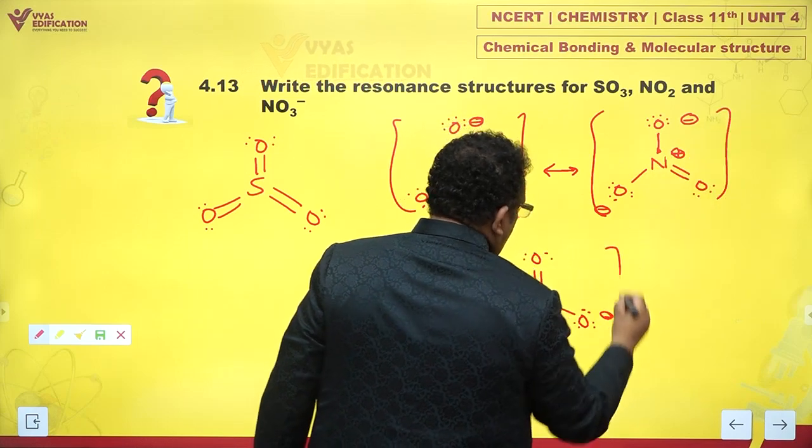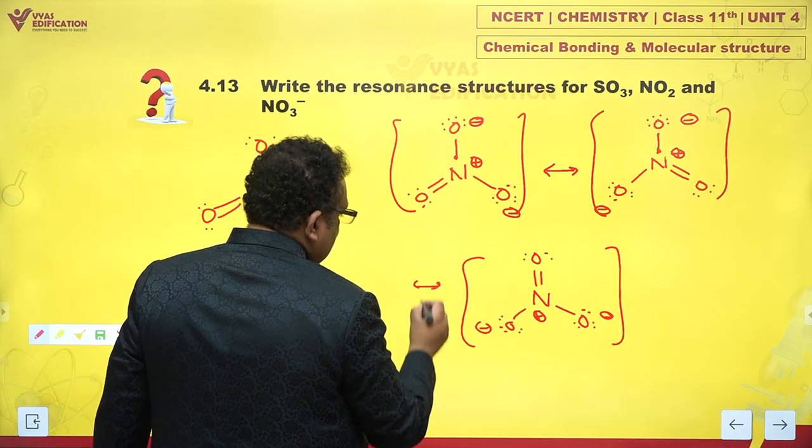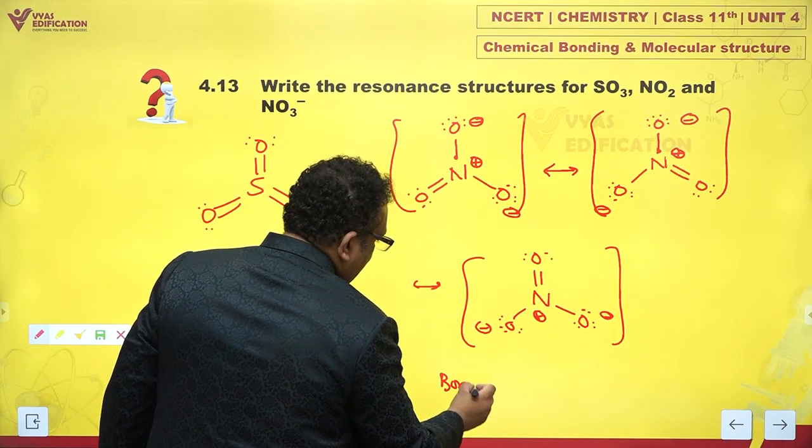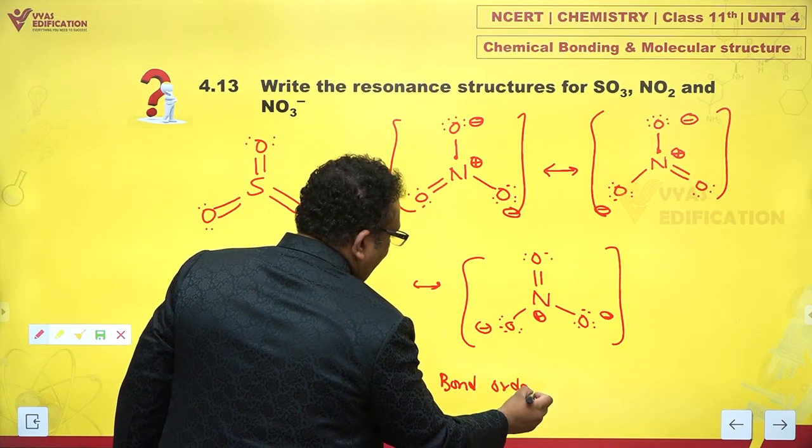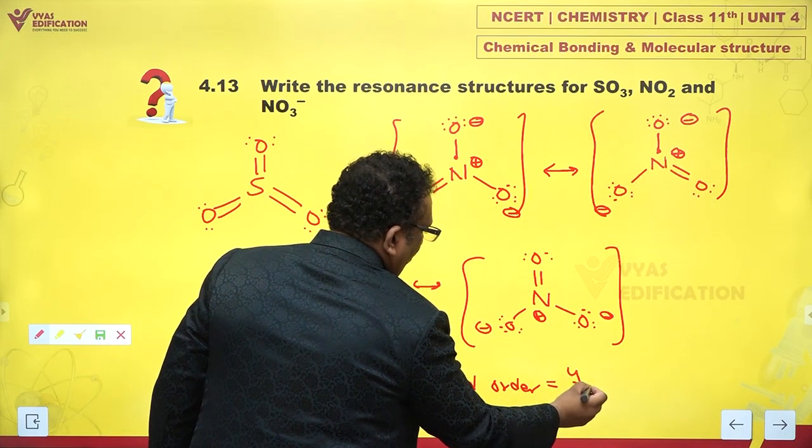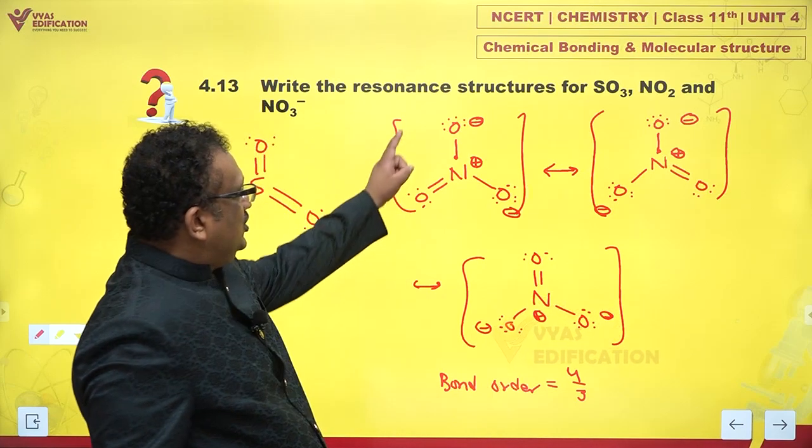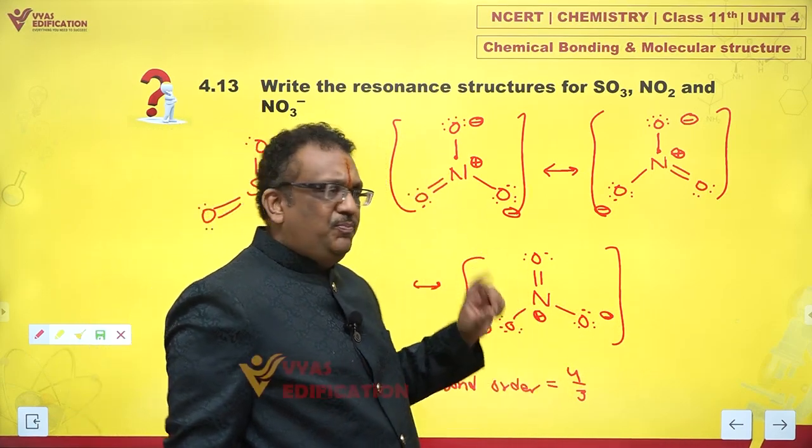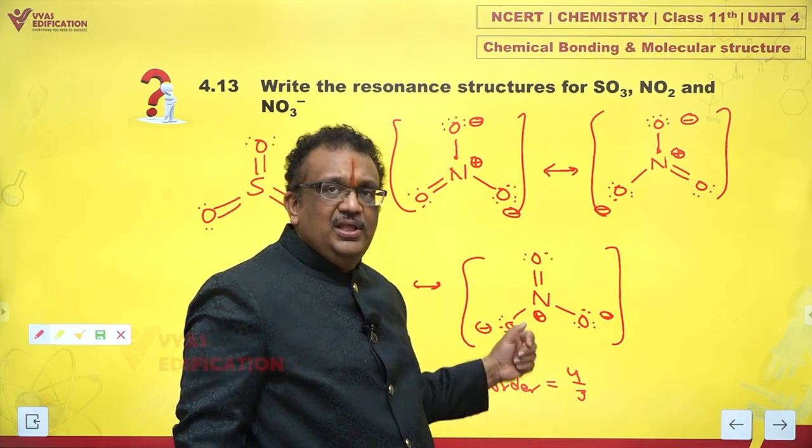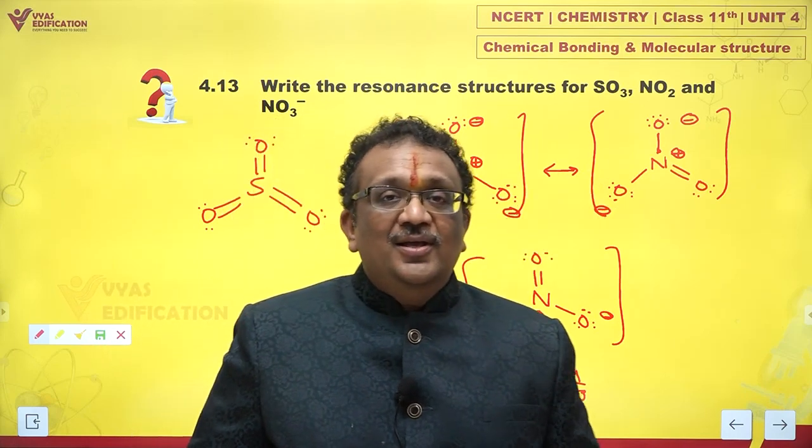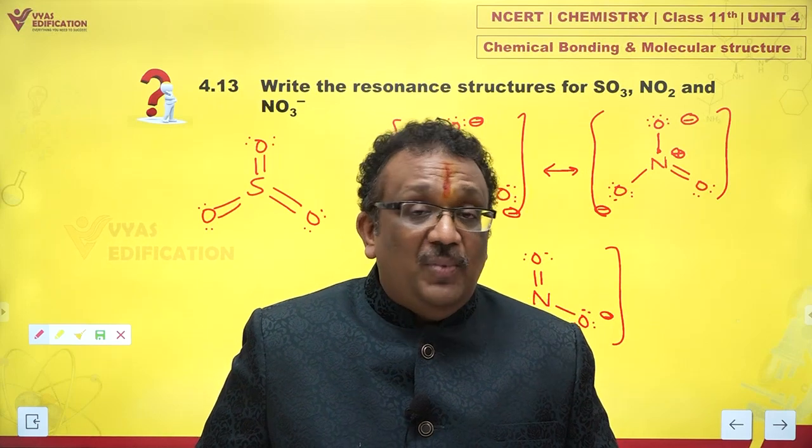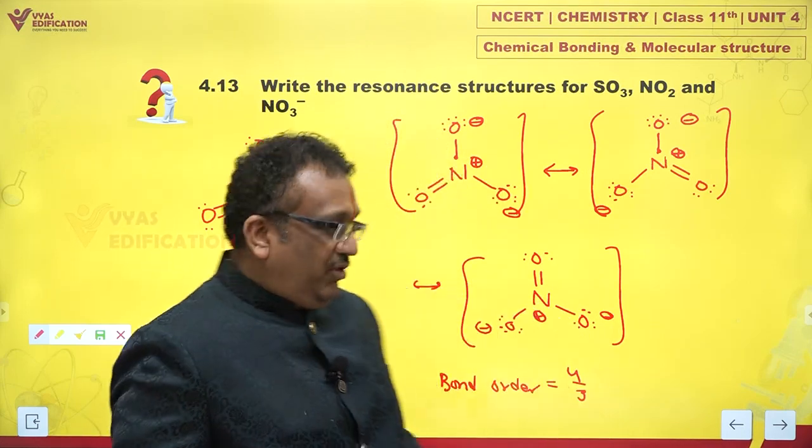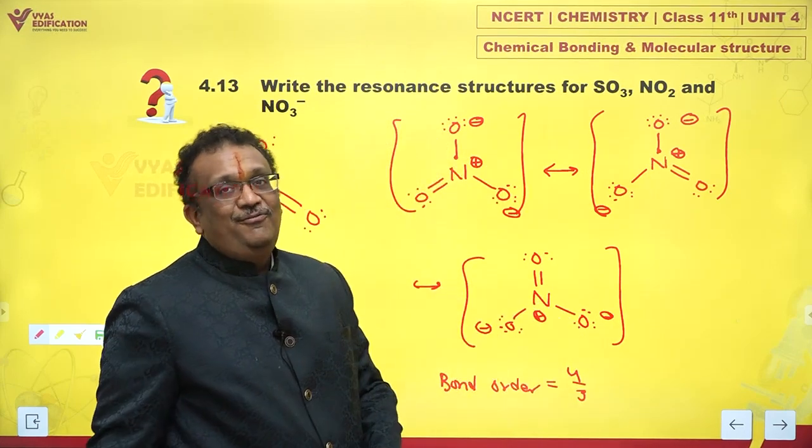Bond order, if you care to find out, will be four by three. Why? Because one sigma bond is always there. Pi bond, it is just like carbonate, so pi bond either here or there or there. It is divided between three, so one by three is the contribution of pi bond to each NO bond. One plus one by three, that makes it four by three.